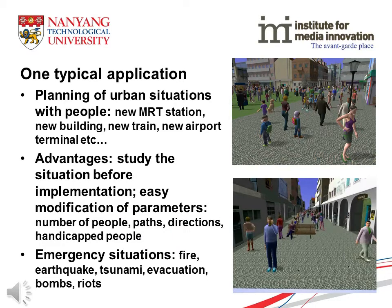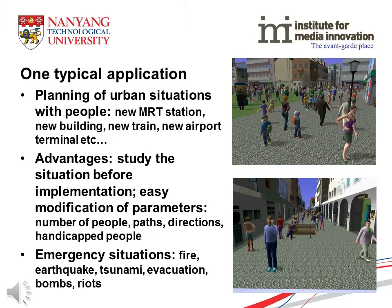A typical application of crowd simulation is the planning of urban situations. For example, if we design a new metro station, a new building, a new train, a new airport terminal, we would like to have a simulation of the situation before it is done. The advantage is that we can study this situation before the implementation, and we can change the parameters — the number of people, the path, the direction, if there are handicapped people, for example. And if there is a problem, I mean an emergency, an evacuation, a fire, we can also simulate the situation.